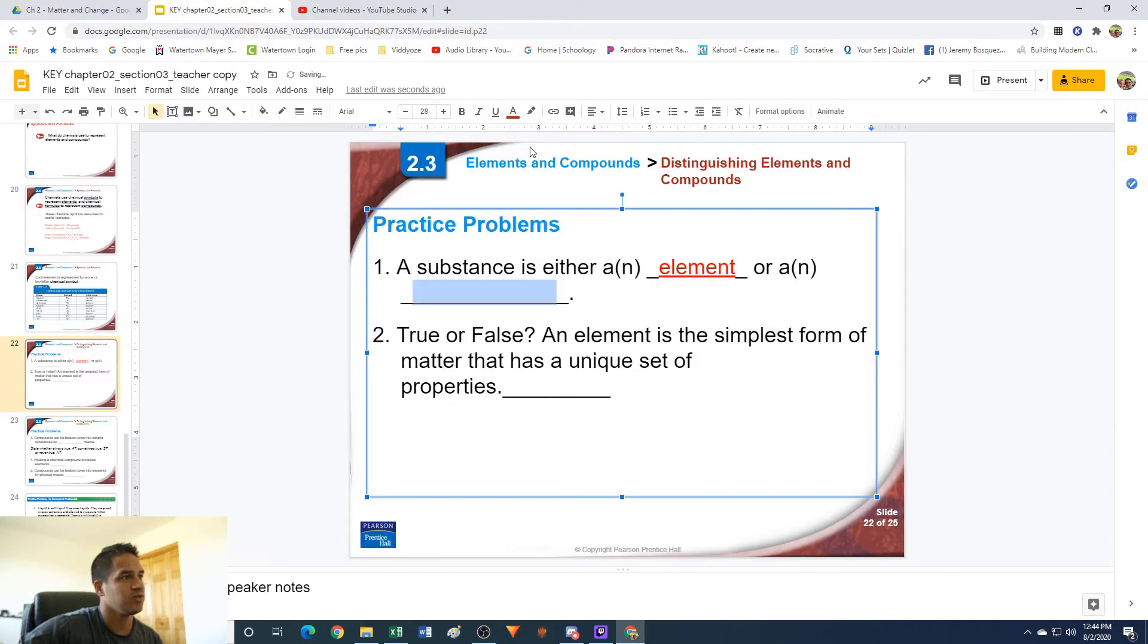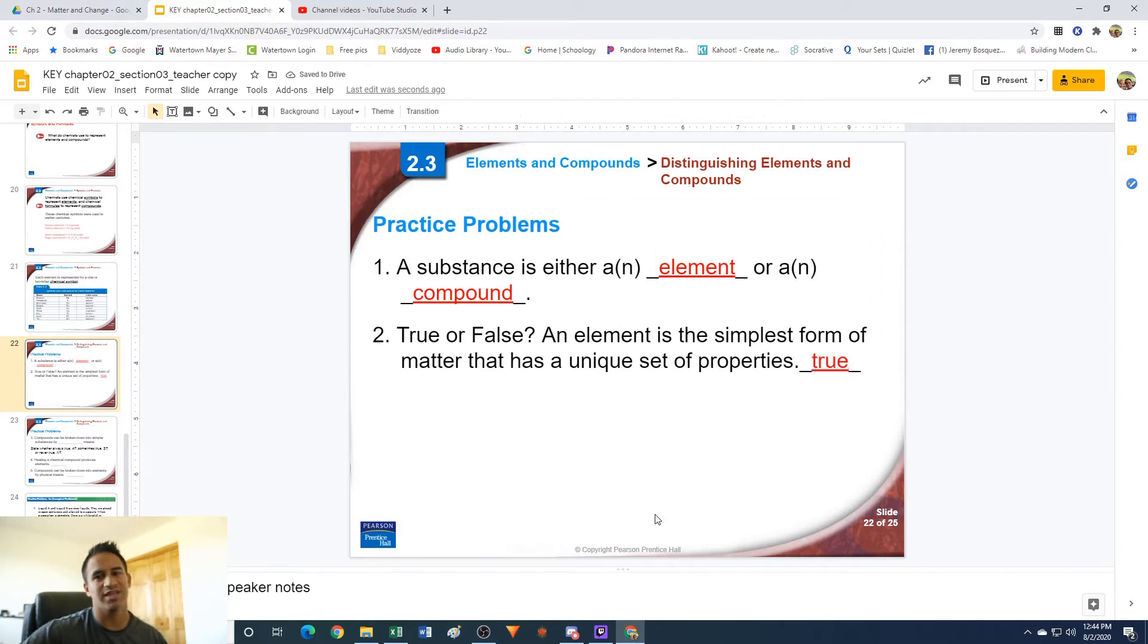Number two, true or false: an element is the simplest form of matter that has a unique set of properties. That is true. Remember that an element is the simplest thing you can get that still has properties. If you go any smaller than an element, you start getting into the subatomic, like protons and neutrons and electrons, and those things no longer have a unique set of properties anymore.